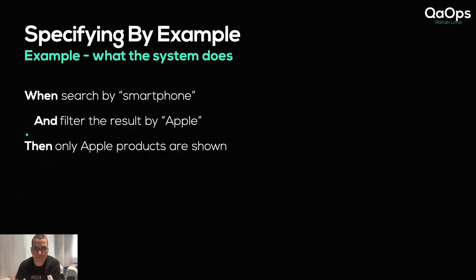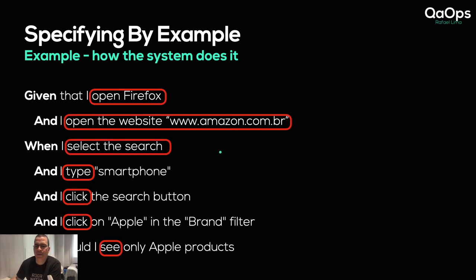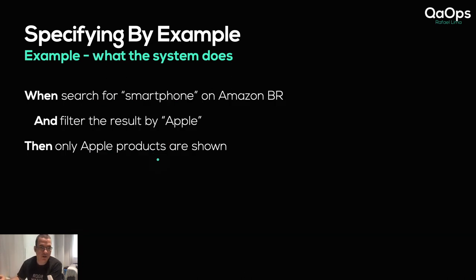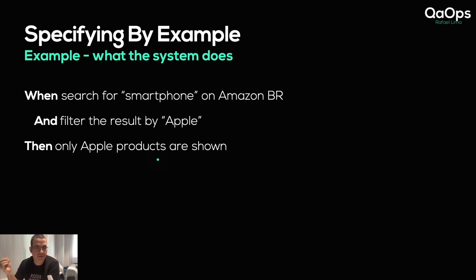This is not a testing script — reading it, you clearly understand what this scenario is doing. With so many steps it's hard to figure out what's going on, and multiple scenarios like that make a polluted file. Now we have a simple three-line thing: when I search and filter, then Apple products are shown. You're testing the search and the filter — that's very clear.